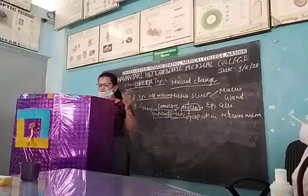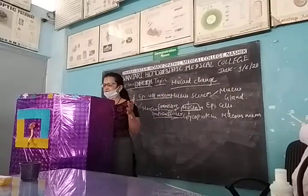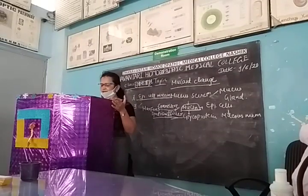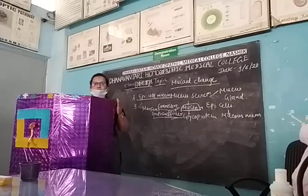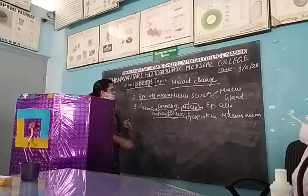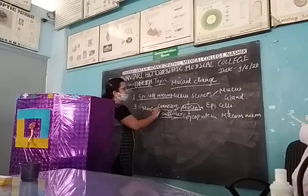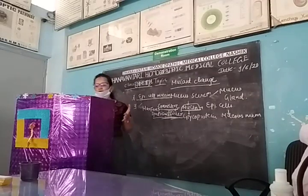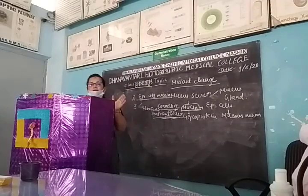Third is myxomatous changes in the dermis in myxoedema. Fourth is myxoid change in the synovium in the ganglion. All these are examples where there is increase in connective tissue mucin. This is all about the mucoid change in reversible cell injury. Thank you.